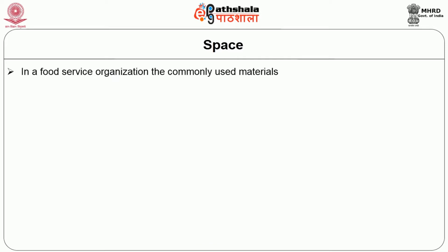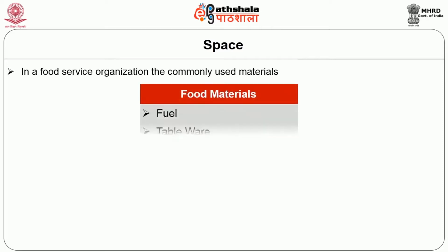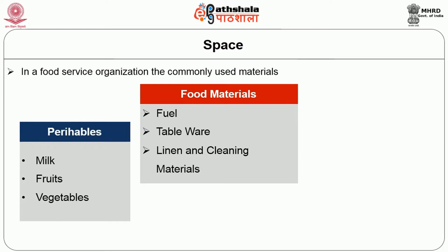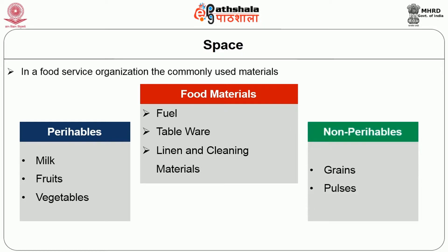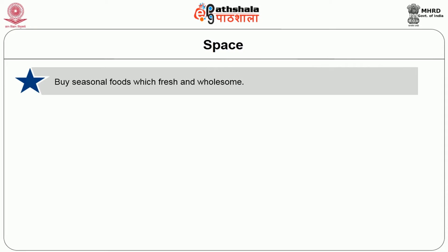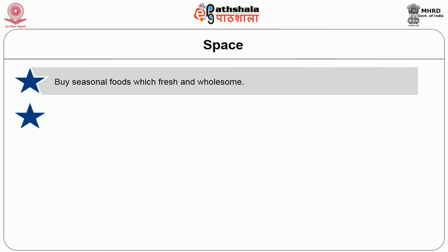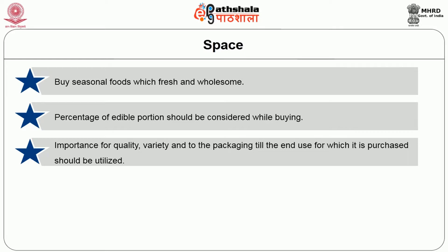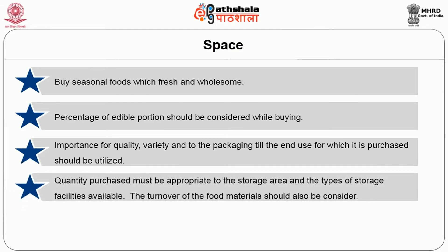Next are materials. In a food service organization, the commonly used materials are food materials, fuel, tableware, linen, and cleaning materials. Food materials include perishables like milk, fruits, vegetables, and non-vegetarian food, which get easily spoiled, and non-perishables like grains and pulses. While purchasing food material, certain points should be considered: buy seasonal foods which are fresh and wholesome; consider the percentage of edible portion; ensure importance for quality, variety, and packaging; and ensure quantity purchased is appropriate to the storage area and type of storage facilities available. The turnover of food material should also be considered.